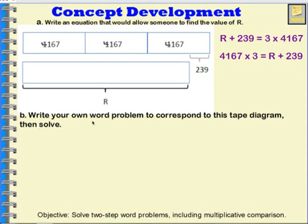Now it says write your own word problem to correspond to this tape diagram and then solve it. When it asks you to do something like this, you have to use your imagination. They want to make sure you can look at this tape diagram and recognize what kind of story would fit it. I'm making this up: Drew Brees threw for 4,167 yards in three seasons, so in one season he threw for 4,167 yards, in another season he did, and in another season. So for three seasons that's the amount of yards he threw for.